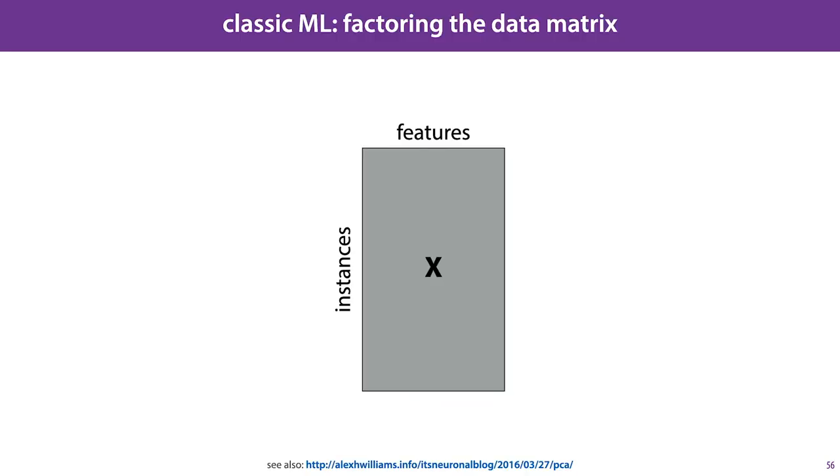In the classical machine learning setting, our data can also be seen as a matrix. We usually represent this with an instance per row and a feature per column. So what would happen if we apply matrix factorization to this matrix?